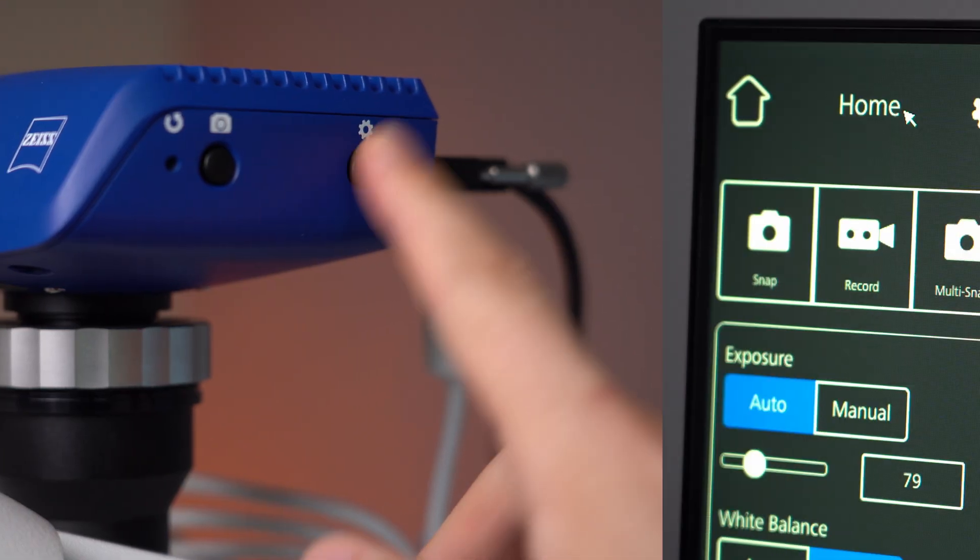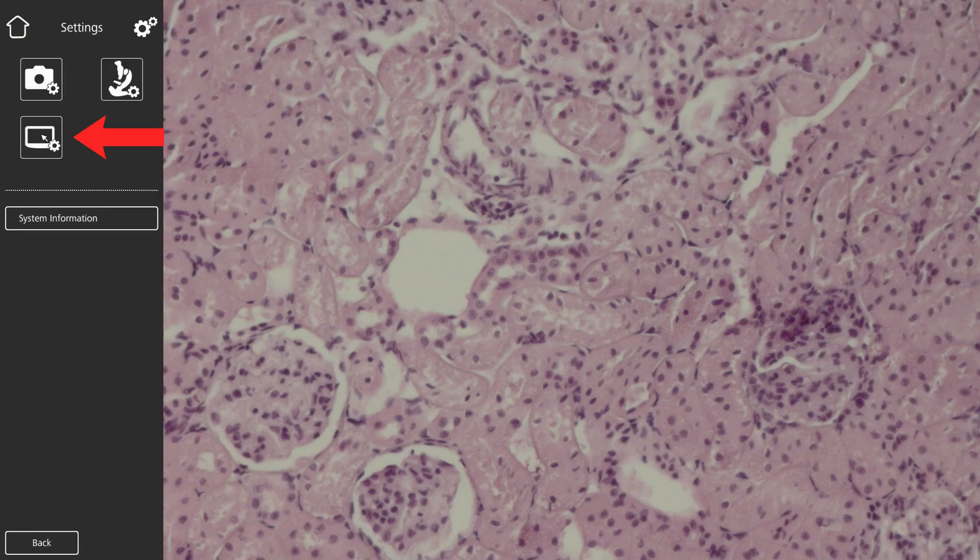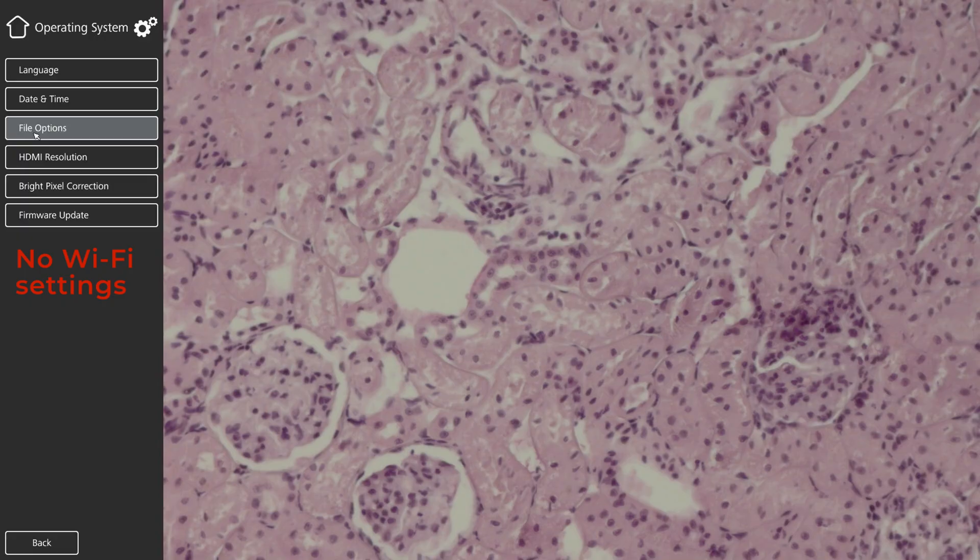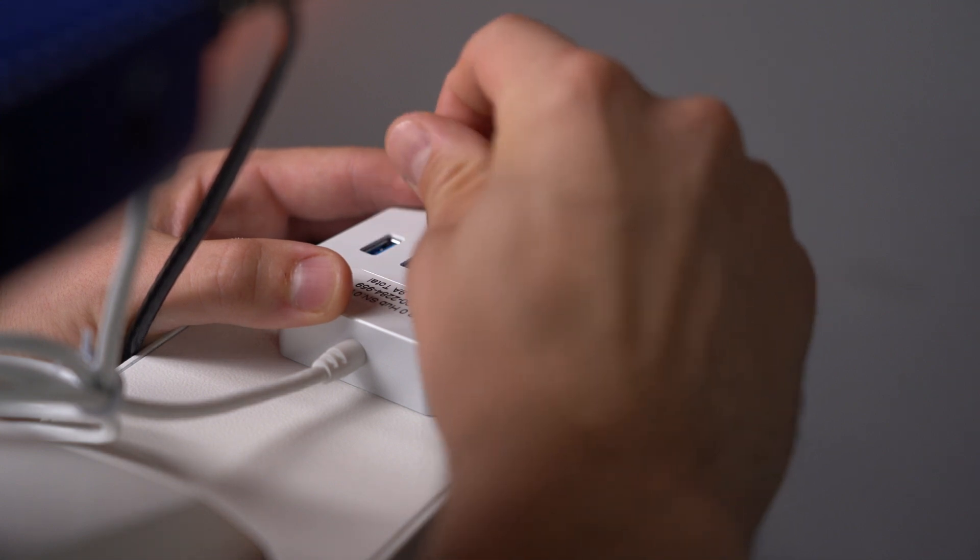After the image appears on the screen, press the settings button to open the OSD menu. Go to settings, operating settings, Wi-Fi settings. If you can't find the Wi-Fi settings button in this list, check the connection between the Wi-Fi adapter and the Axiocam camera or change the adapter to a compatible one.